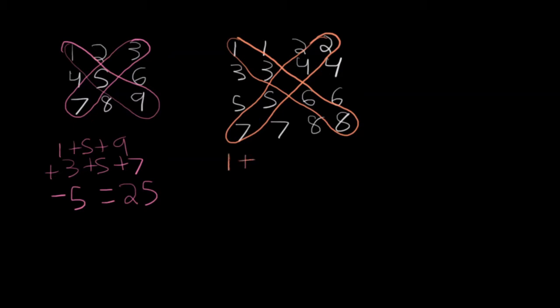Now notice in this case, there's no overlap. So this is 1 plus 3 plus 6 plus 8, and then 2, 4, 5, and 7.